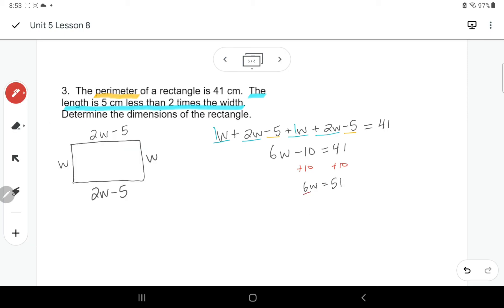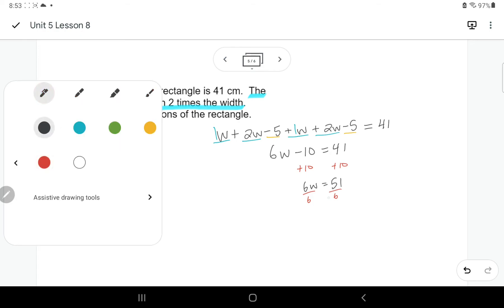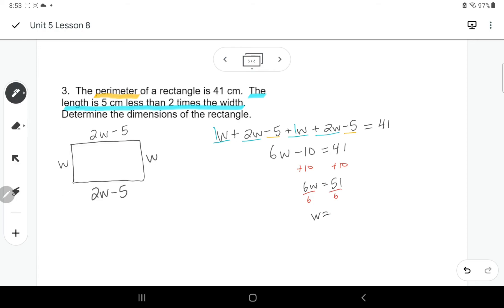So here I get 6W equals 51. And we'll divide by 6 on both sides to get W by itself. So W equals I think that's 8.5 centimeters.